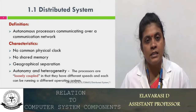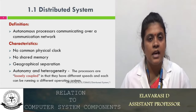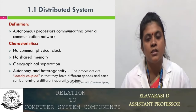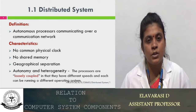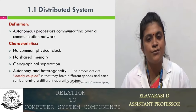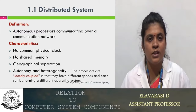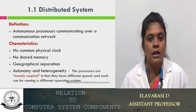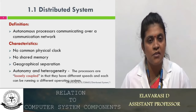The next third characteristic is that it is geographically separated. The processors which are geographically separated are able to communicate over the communication network, and it forms a distributed system. The processors which are in different geographical locations — we are able to access those resources efficiently.